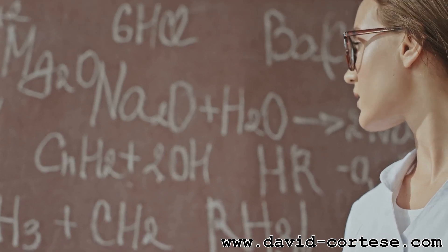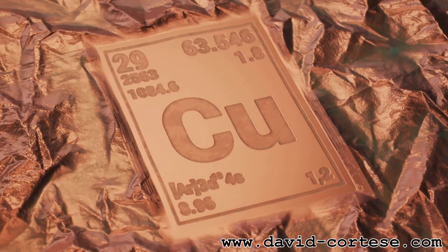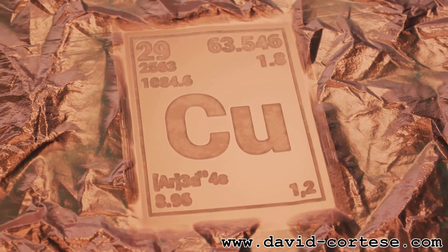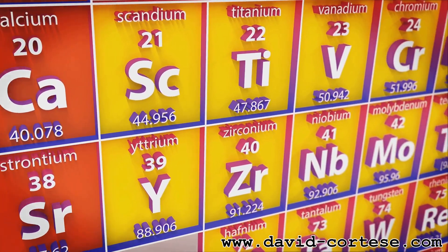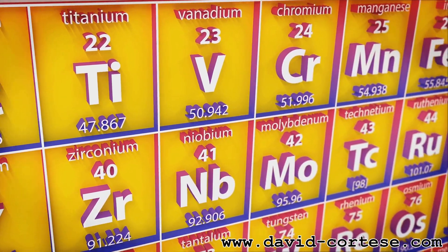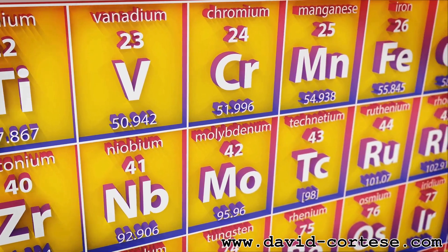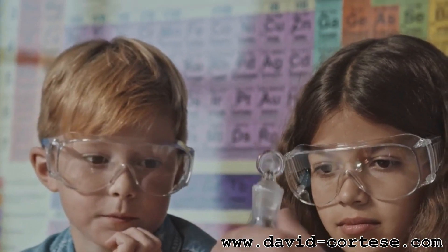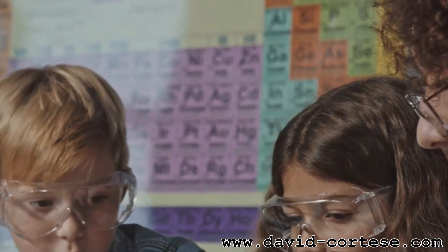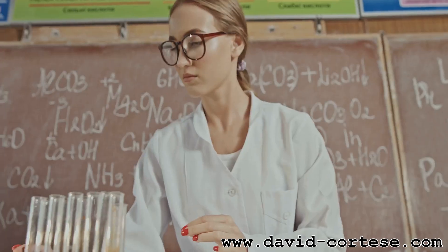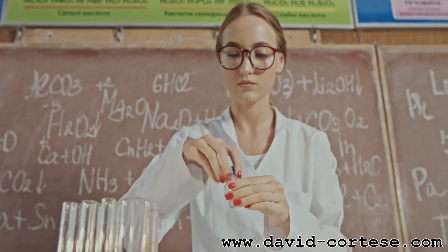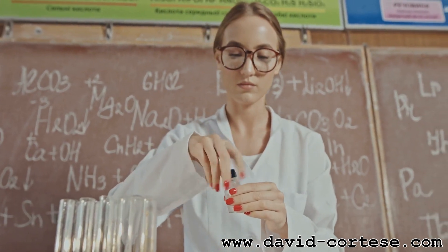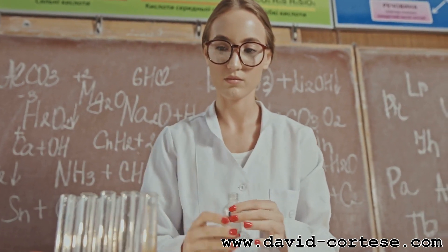The periodic table isn't just about names and numbers — it's a treasure trove of information about each element's properties. Looking at an element's position on the table can tell you about its atomic radius, electronegativity, ionization energy, and more. For example, elements on the left side of the table tend to be reactive metals, while those on the right side are mostly non-metals. The noble gases, located in the far right column, are known for their lack of reactivity.